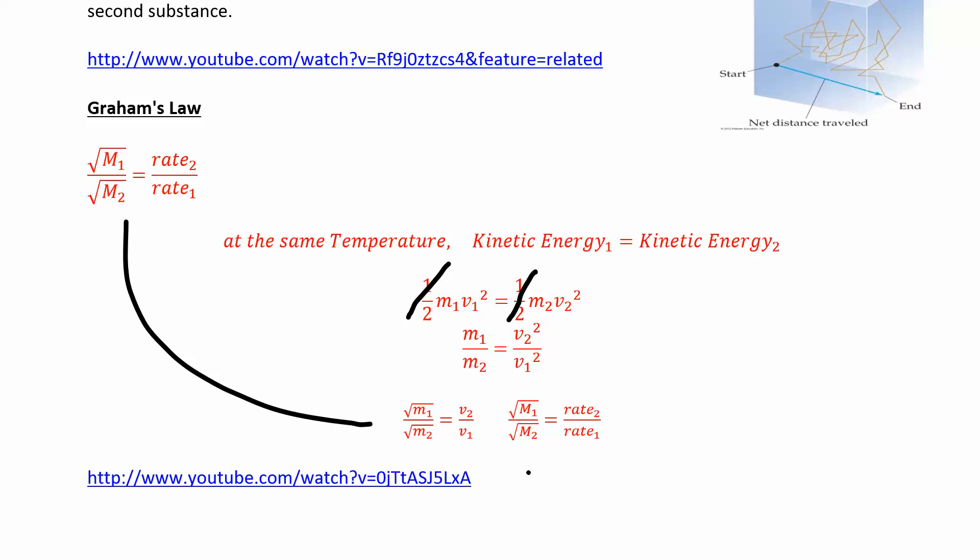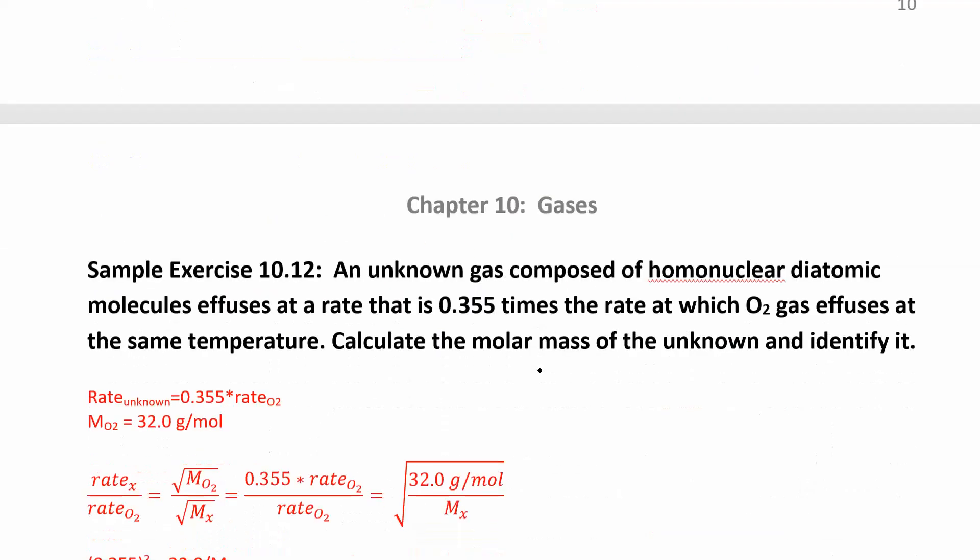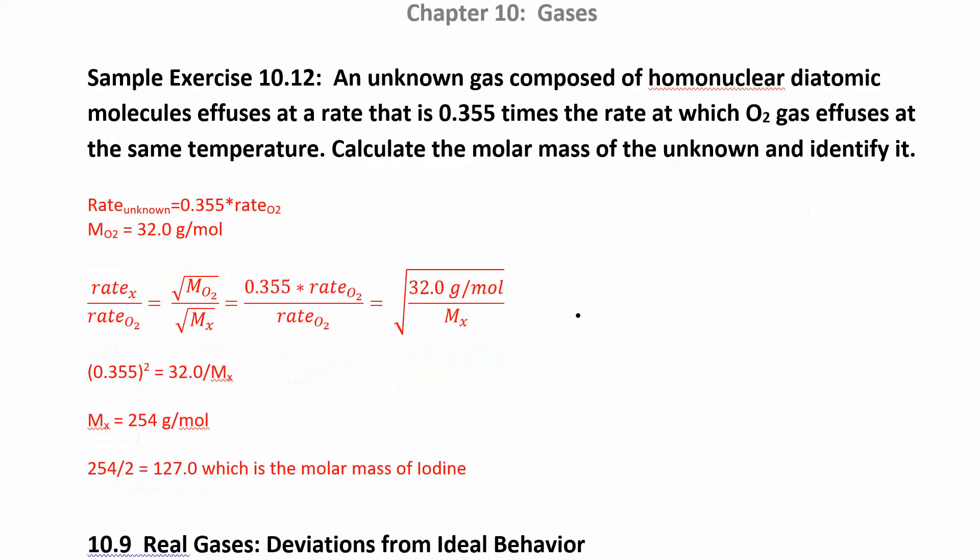There's another video that shows you an application of this. But we can walk through a problem, a pretty common problem related to Graham's Law. So an unknown gas composed of a homonuclear diatomic molecule—that's something like H2. Homonuclear means one type of nucleus, but you have two of them because it's diatomic. So H2, N2, O2, all those diatomic molecules. An unknown gas composed of a homonuclear diatomic molecule effuses at a rate that is 0.355 times the rate at which oxygen effuses at the same temperature. Calculate the molar mass of the unknown and identify it.